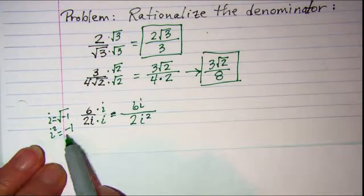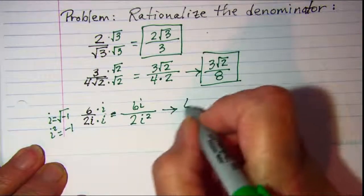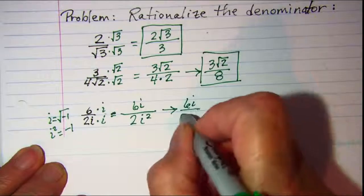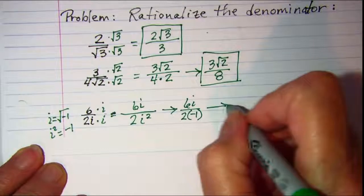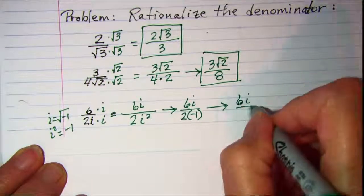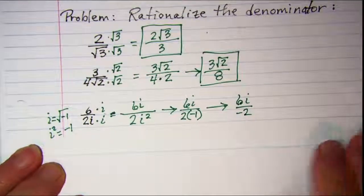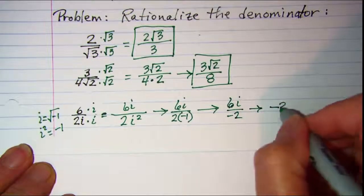Well, i squared is the same as negative 1. So this is 6i over 2 times negative 1. That simplifies to 6i over negative 2, which is negative 3i.